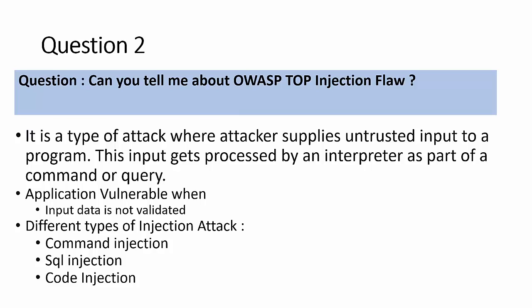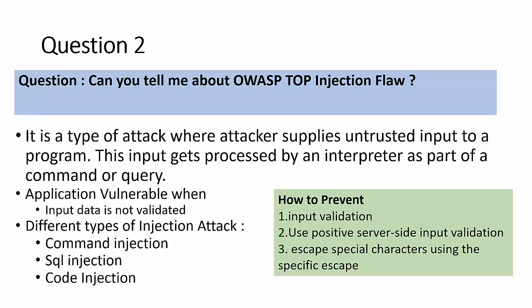There are different types of injection: command injection, where OS commands like 'dir' or 'cmd' are entered to find details about the target; SQL injection, where SQL queries are injected; and code injection, where malicious code is injected. To prevent injection: apply input validation using positive server-side input validation, and escape special characters that promote malicious queries.